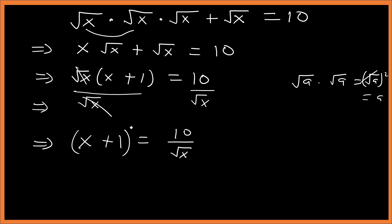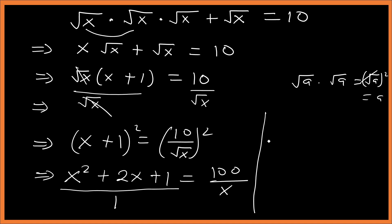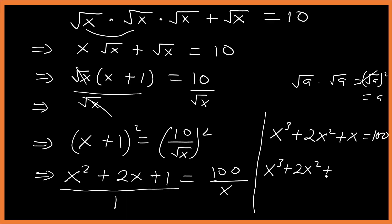So x plus square root of x plus 1 equals 10. Squaring both sides gives 10 squared equals 100. Expanding (x plus 1) squared: x squared times x gives x cubed, plus 2x squared, plus x. So we have x cubed plus 2x squared plus x minus 100 equals zero.